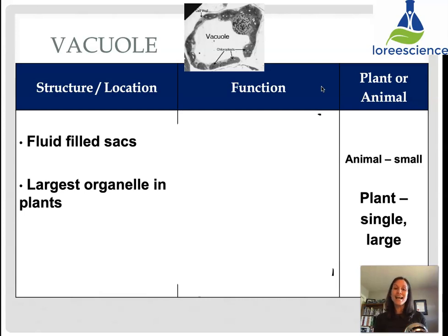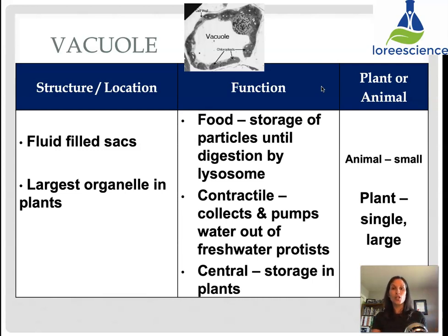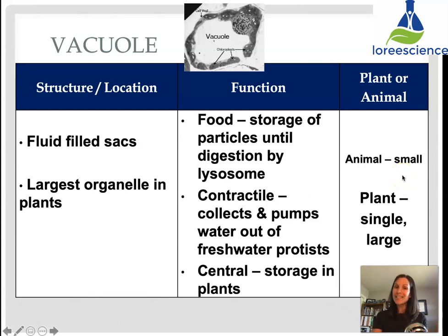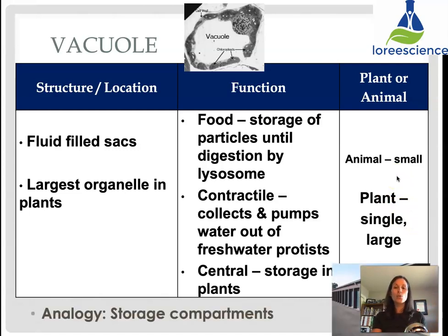Vacuoles are fluid-filled sacs and are the largest organelle found in plants. Their primary job is storage — food storage until it can be broken down by lysosomes, and water storage for when the plant needs it. They also collect and pump water out of freshwater protists, or single-celled organisms, to allow them to move. While storage is the primary function, vacuoles can have other roles in different types of organisms. Some animal cells like fat cells will have a few vacuoles, but plants all have a single large central vacuole. The analogy would be like storage closets or compartments.